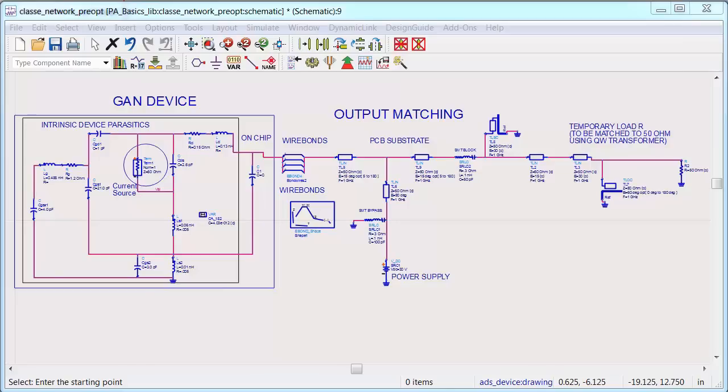So now I'll attempt to synthesize a realistic class E network for this gallium nitride PA. I took an educated guess at the circuit topology, and then I used circuit optimization to try to match the impedances. So here's my network. It's very important to include device parasitics to achieve the right waveforms inside of the device. That's what really matters for efficiency.